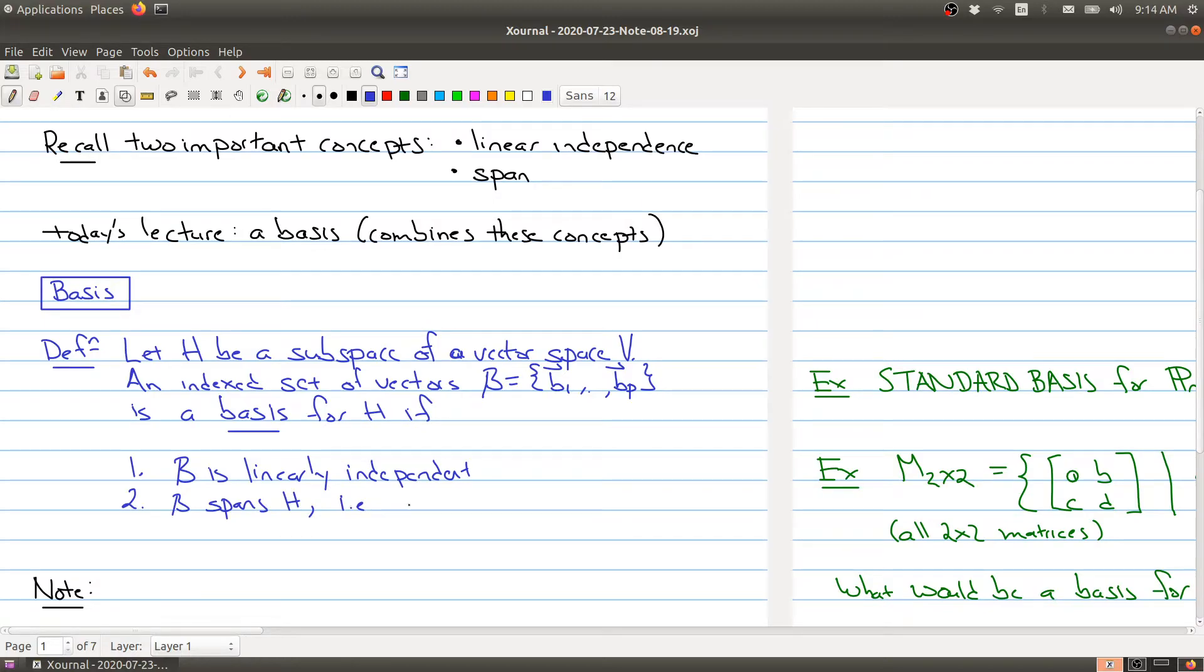The second property we want is that B spans H, i.e., H can be written as linear combinations of b_1 through b_p. Probably the most important time that we need to know this is if H equals V. So if we're talking about the vector space V, we call B a basis for our vector space V. A basis is a set of vectors that is both linearly independent and spans the set of vectors.